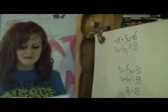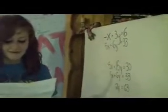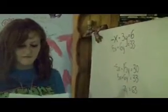Since the x terms already have opposite signs, eliminate the x terms first. To do this, multiply the first equation by 5 and then add the two equations together. Now solve for y by dividing both sides by 21. Y equals 3. Substitute y equals 3 into the first equation and solve for x. Be sure to write the ordered pair (3, 3).